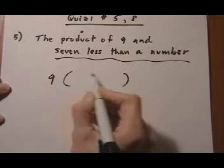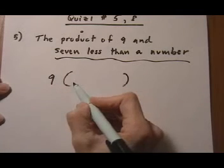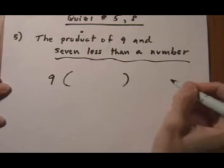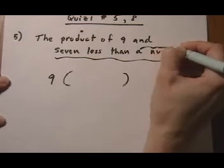That way the 9 is multiplying all of it and not just one term of it. So then we've got to figure out, well, what's this other stuff? It's 7 less than a number. And here the order is really important because the question is, well, first of all, a number will be x.